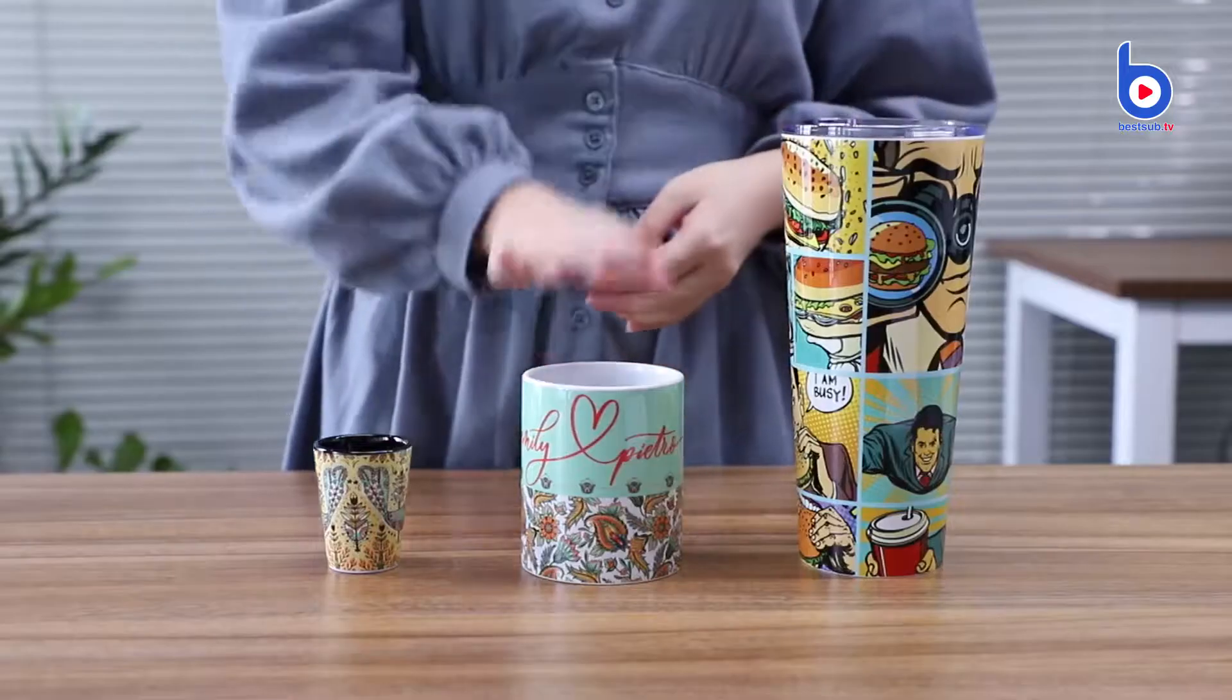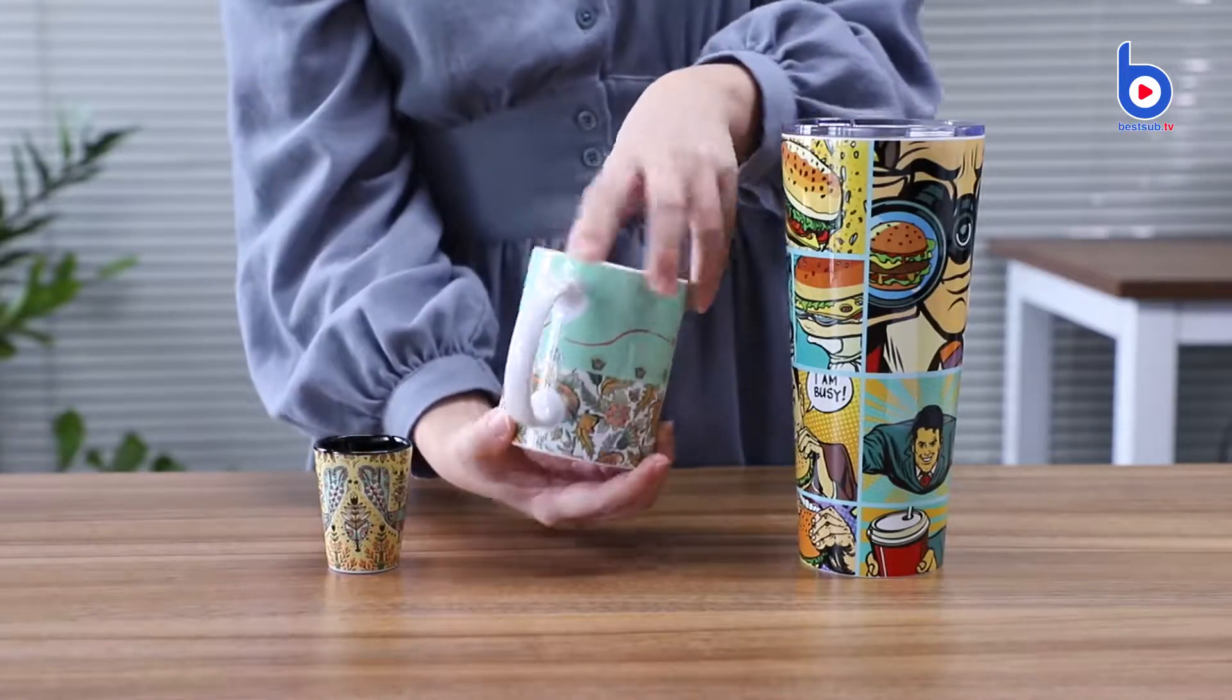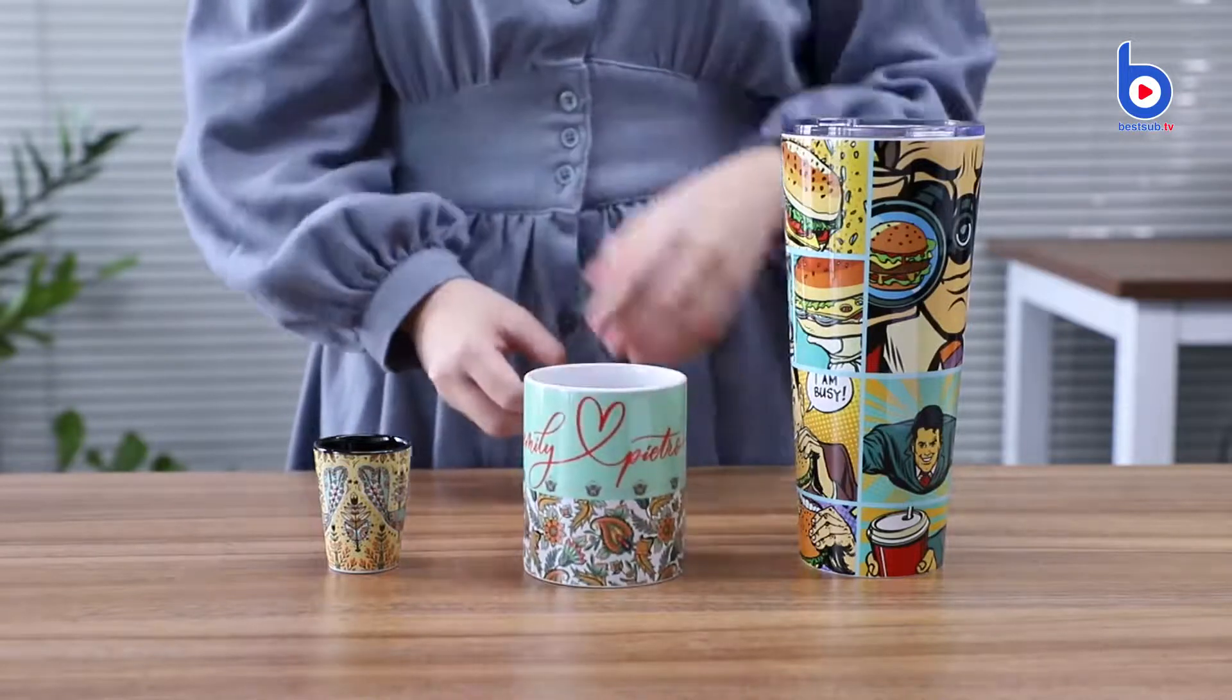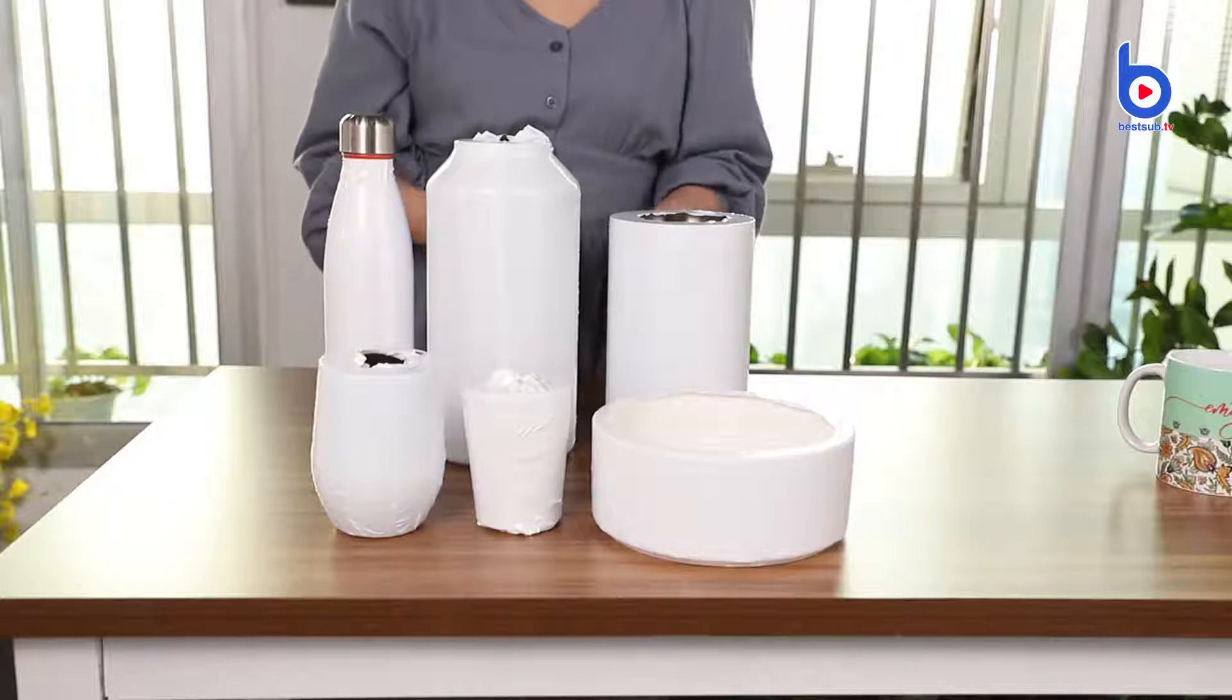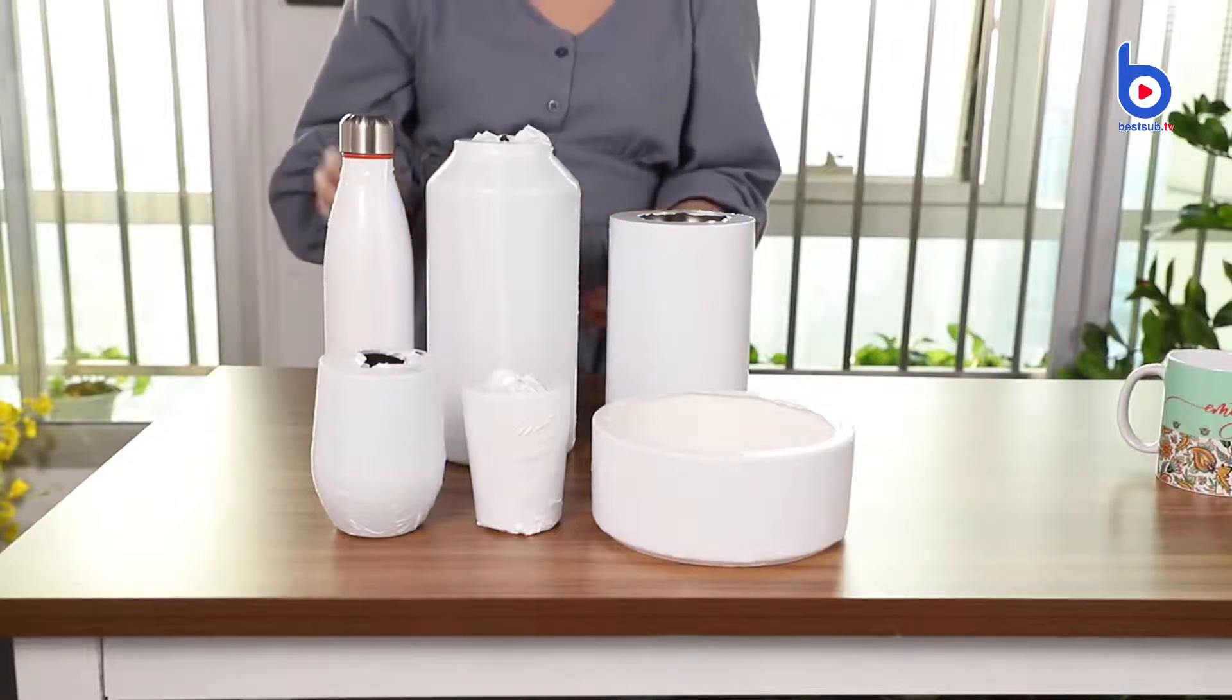Now the tumbler, the mug and the short glass are done. The full bleed printout qualities are so amazing. They look so nice and the colors are printed so well. Our shrink films can also be applied to all these products here.